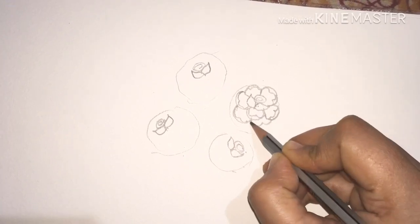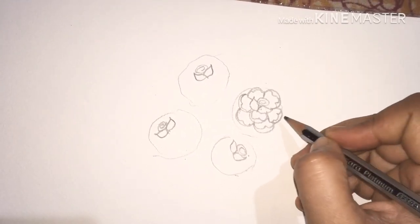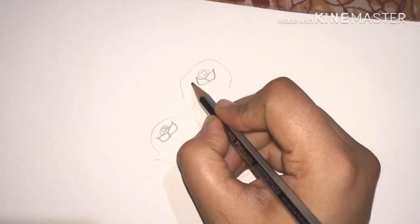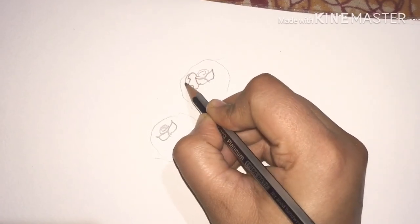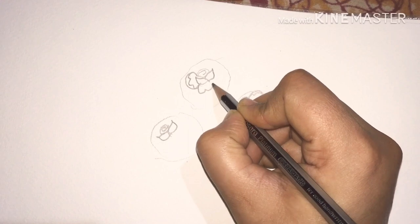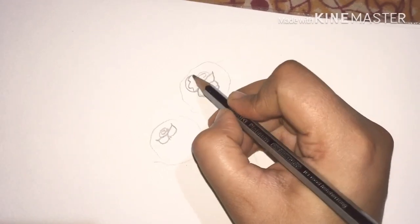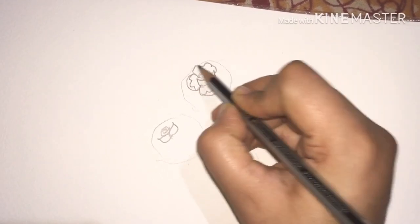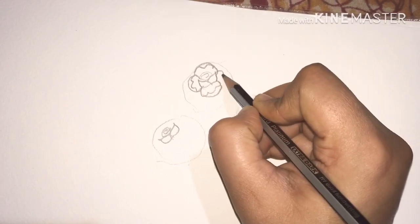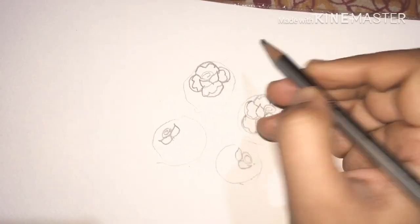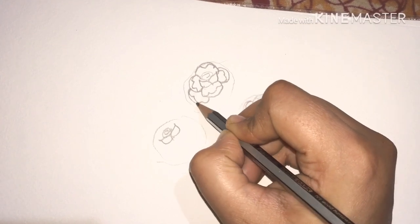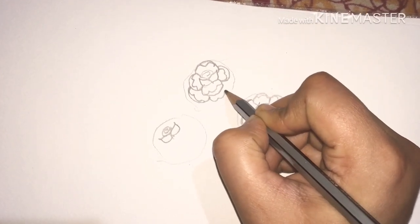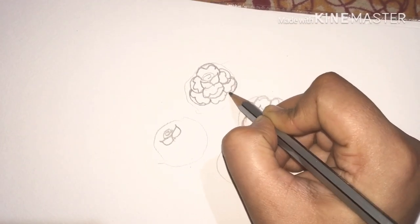We'll color it too. Now we will make this. This is a big rose having big petals.